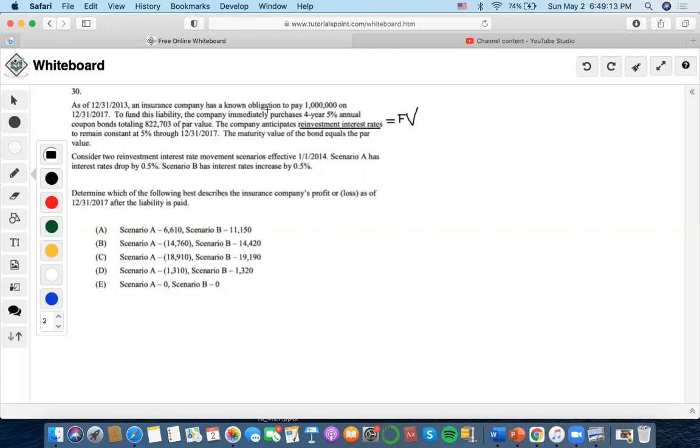So for this one, it says the insurance company needs to pay out a million, and to fund the liability, the company immediately purchased four-year, 5% annual coupons, totaling $822,703 of par value. We need to create a reinvestment future value equation based upon the amount of coupons that the company purchases. They give us a par value, so we need to find out the amount of coupon given. To do that, we take the par value multiplied by the coupon rate, and we get $41,135.15. That is the coupon that happens every year. So we're going to reinvest that amount.